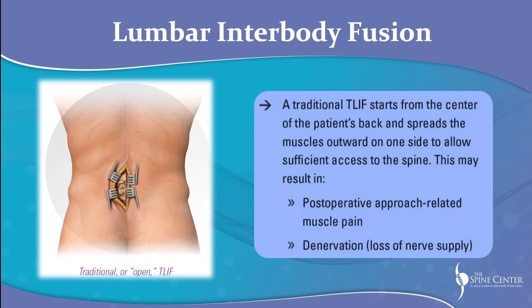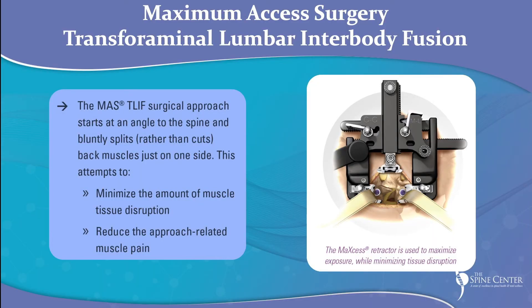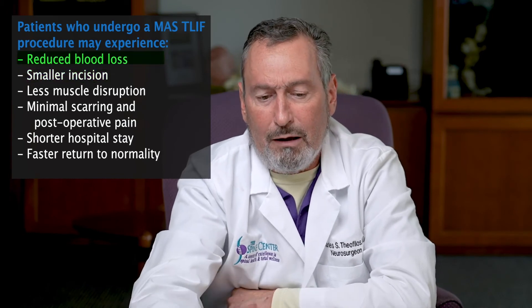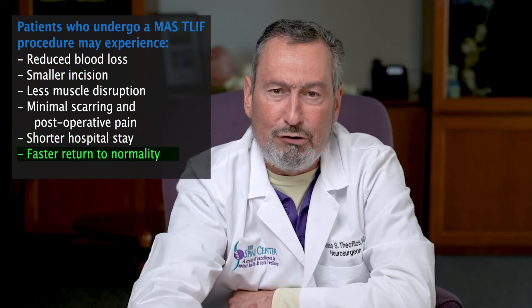In open back surgery, an incision is made in the middle, all muscles are stripped off the bone to get access to the spine, and as a result the muscles die and lose their nerve supply. With minimally invasive fusion, we use the same dilator technique, going between the muscle fibers to spare them. The benefits are much less blood loss — lumbar fusions lose significantly more blood than microdiscectomies — along with a much lower infection rate, shorter hospital stay, and return to normal life sooner. With minimally invasive, we make two small incisions instead of one huge incision.